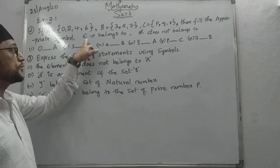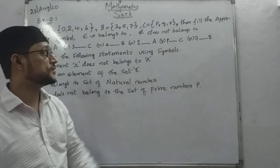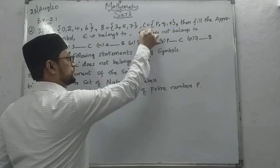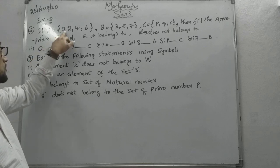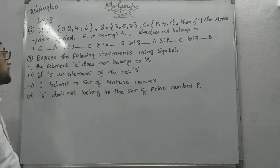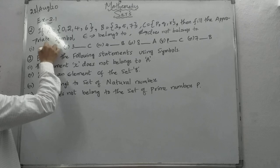This is the belongs to symbol and this is does not belong to symbol. Now C here 0, 0 as we said A, that is nothing but belongs to.